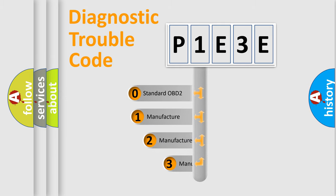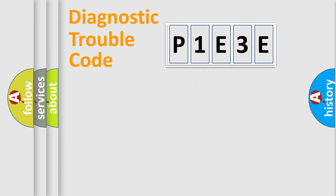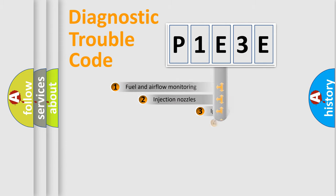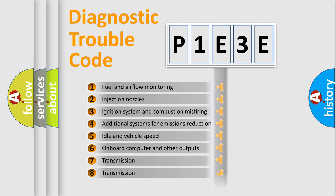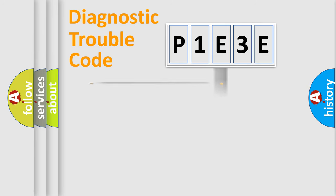If the second character is expressed as zero, it is a standardized error. In the case of numbers 1, 2, 3, it is a manufacturer-specific expression of the car-specific error. The third character specifies a subset of errors. The distribution shown is valid only for the standardized DTC code.